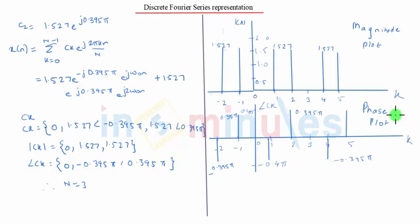These are the magnitude and phase plots. For the value of k equals 0, the magnitude is 0. For k equals 1 and 2, the magnitude is 1.527. Similarly, for the phase plot, for k equals 0 it is 0. For k equals 1, that is minus 0.395 π, and for k equals 2, that is 0.395 π. So we have seen the frequency spectrum of x of n. Thank you.